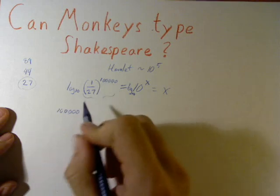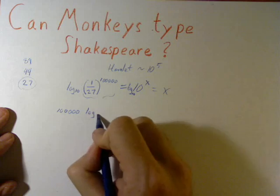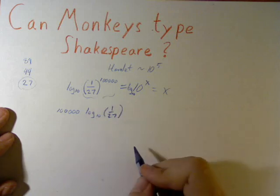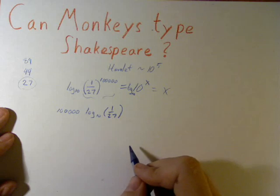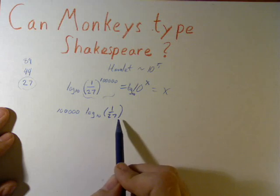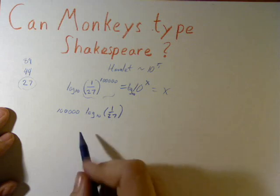So, we get log base 10 of 1 over 27. Okay, well, anyone can solve this with a calculator. If we plug this into a calculator, we get